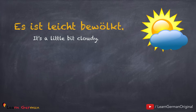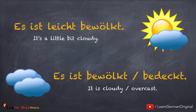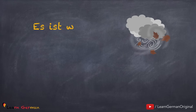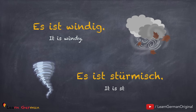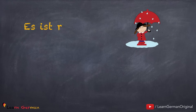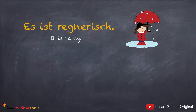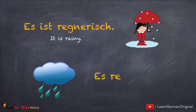Es ist leicht bewölkt. Es ist bewölkt, oder es ist bedeckt. Es ist windig. Es ist stürmisch. When it's raining you could say es ist regnerisch, oder es regnet.